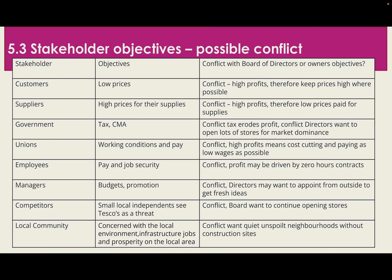If we look at the board of directors' objectives, that's going to totally conflict with what the local community want. Imagine Tesco wants to build a brand new store on a nice green field — there's the conflict, because that goes against what the local community want. You're going to have construction sites, noise, vehicles starting early in the morning, and increased traffic and pollution. The conflict is that the community wants quiet, unspoiled neighbourhoods, which completely goes against Tesco's objectives.